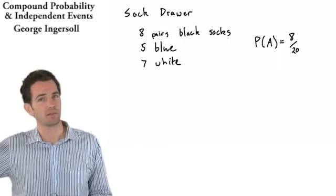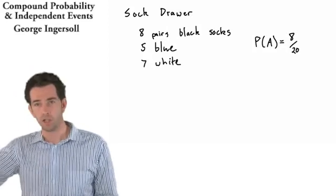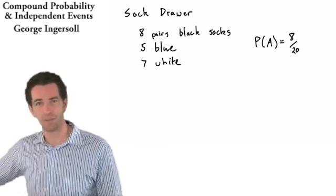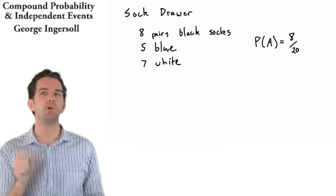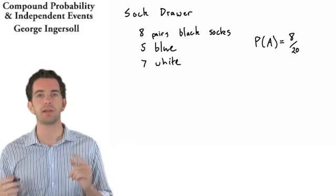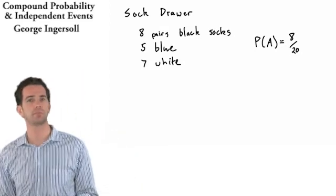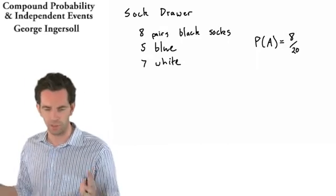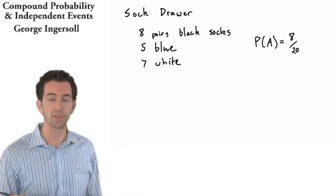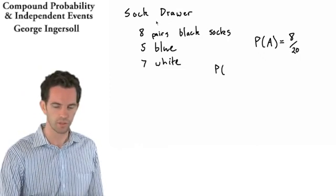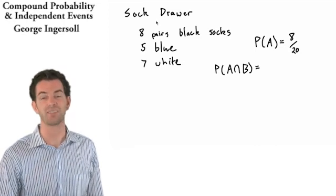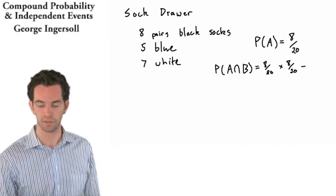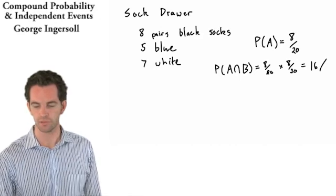What if I rummage around the sock drawer, pull out a sock, look at it, then put it back, mix everything up, and pull out another sock? What's the probability that both socks are black? Does the first draw influence the second? No — because I replaced the sock and rummaged again. So these are independent events and I can just multiply them together: 8/20 times 8/20, which equals approximately 16%.